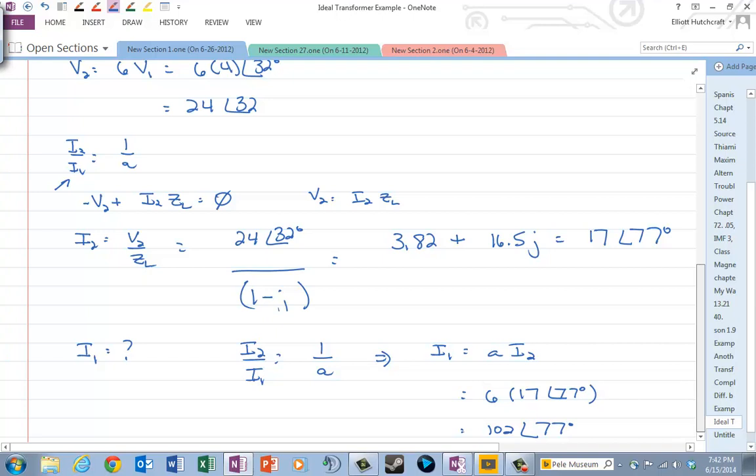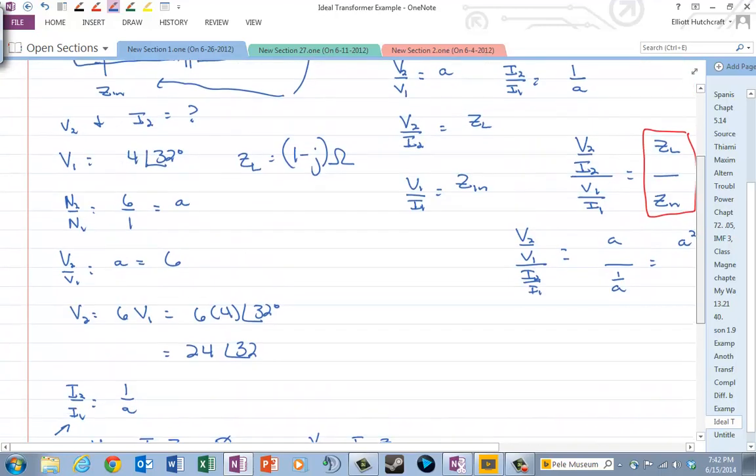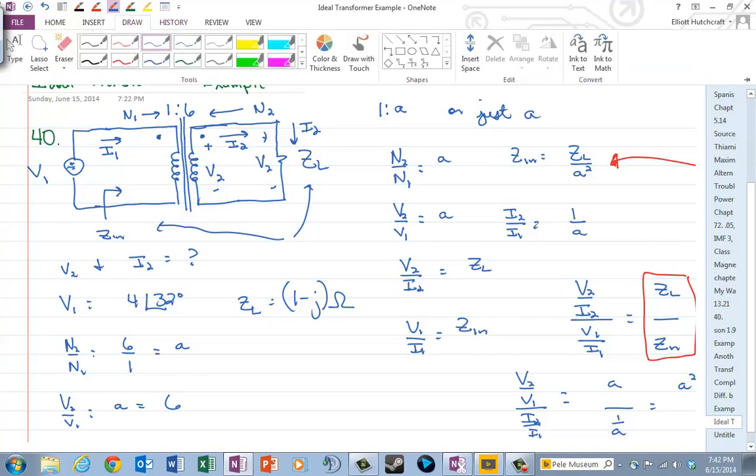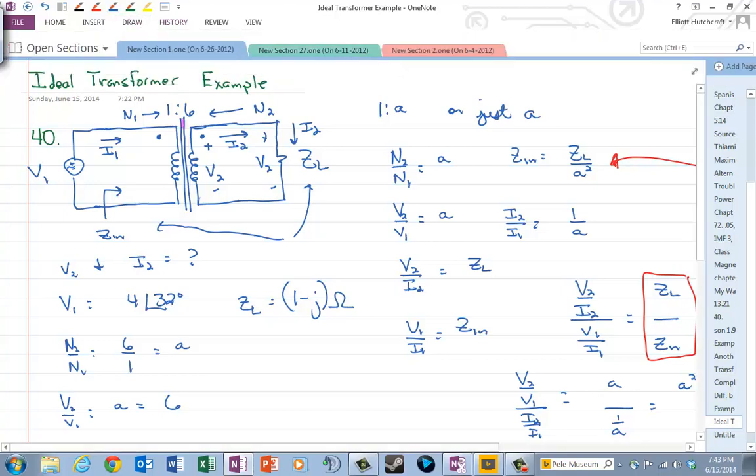Well, the power is the same. And that should make sense because this ideal transformer is supposed to be ideal, which means lossless. So what's going on here in this particular example, as is the case with these ideal problems, none of the power is lost right here.